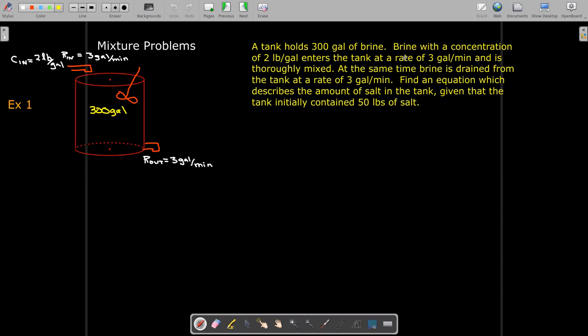Here we have a tank which holds 300 gallons of brine. That doesn't mean the volume of the tank is 300. That means the volume of the brine inside the tank is 300 gallons. And brine with a concentration of 2 pounds per gallon is being poured into the tank.